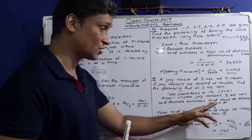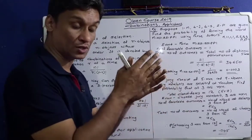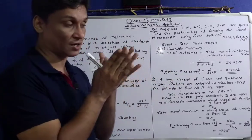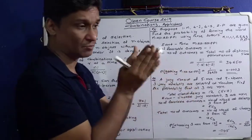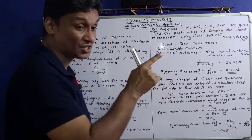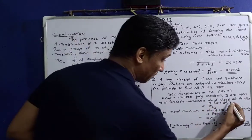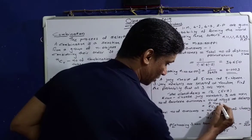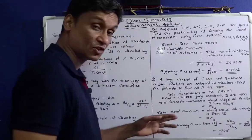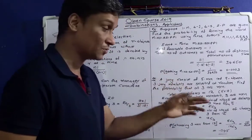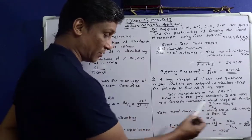Number of favorable outcomes is the number of ways of selecting 3 men from 5. Total number of favorable outcomes: number of ways of selecting 3 men from 5 is 5C3. That is the number of combinations of 5 men taken 3 at a time.